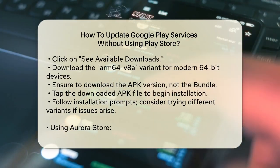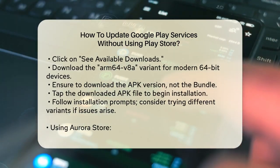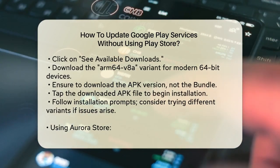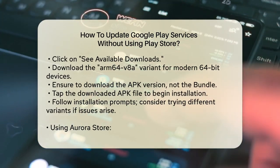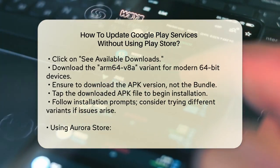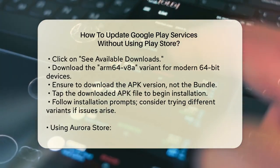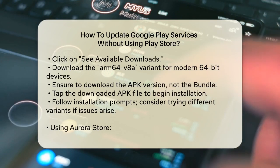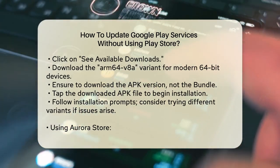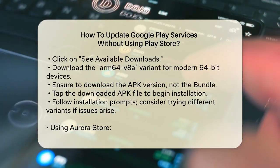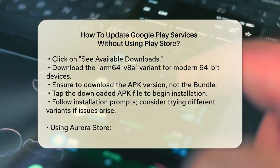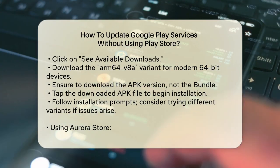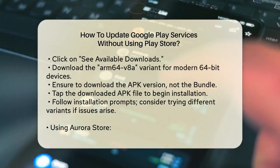Tap the See Available Downloads button. You'll want to download the ARM64-V8A variant, as most modern Android smartphones use 64-bit architecture. Make sure to download the APK version, not the bundle. Once the download is complete, tap the APK file to start the installation process. Follow the prompts to install the update.